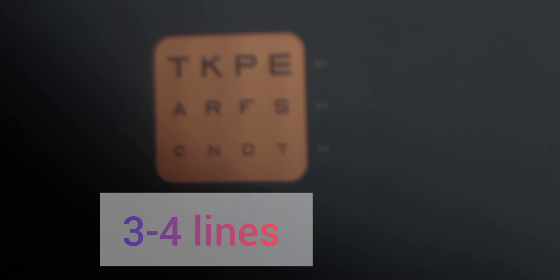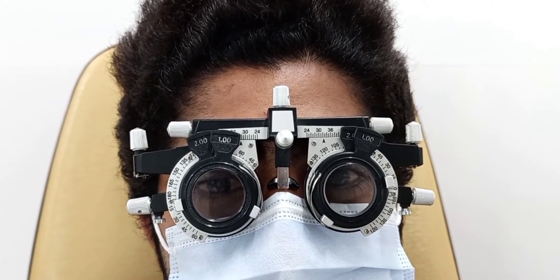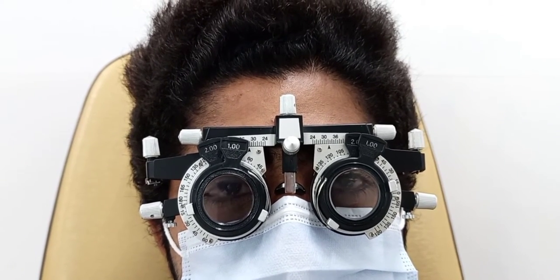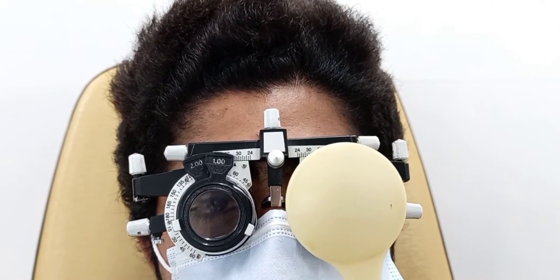The reason we use plus spherical lenses in binocular balancing is that these fogging lenses relax accommodation. We will add +1.00 spherical as the fogging lens before both the right and left eyes. By adding fogging lenses, the visual acuity will get worse — it will reduce by three to four lines. The amount of fogging power needed depends on the patient's age.